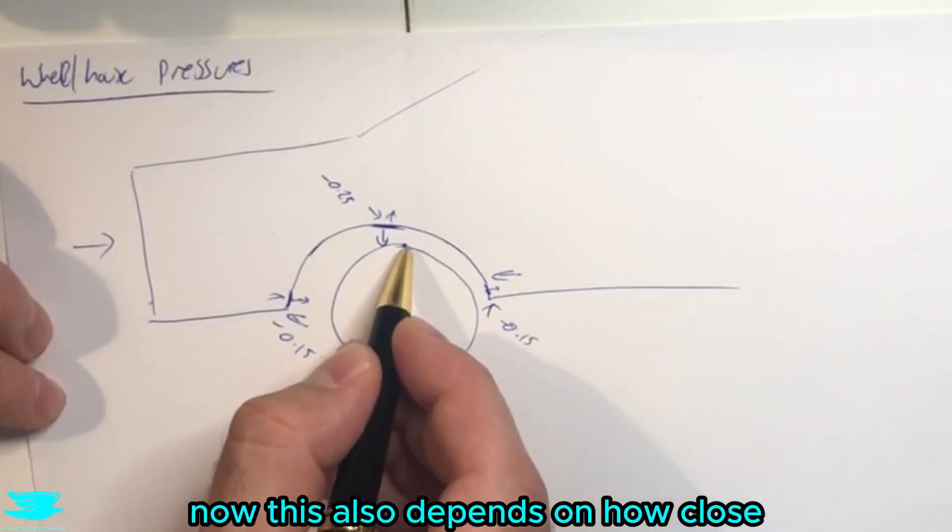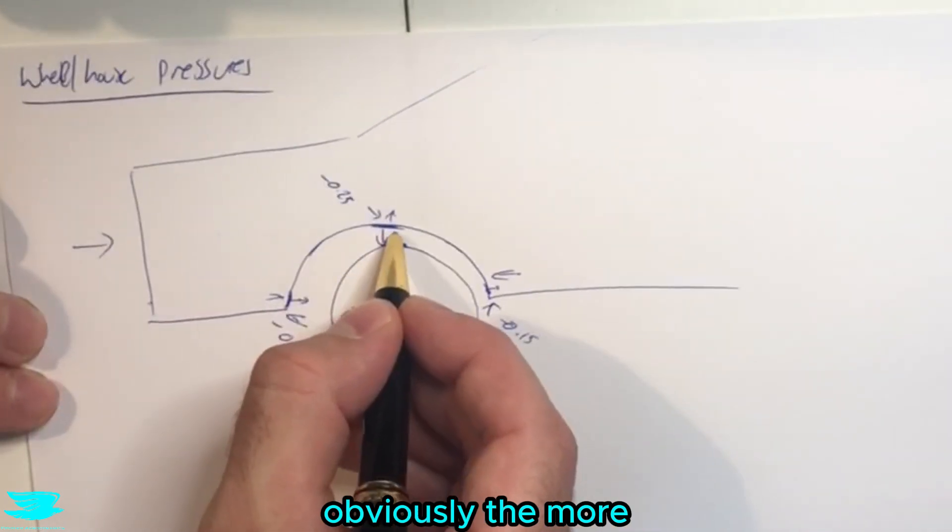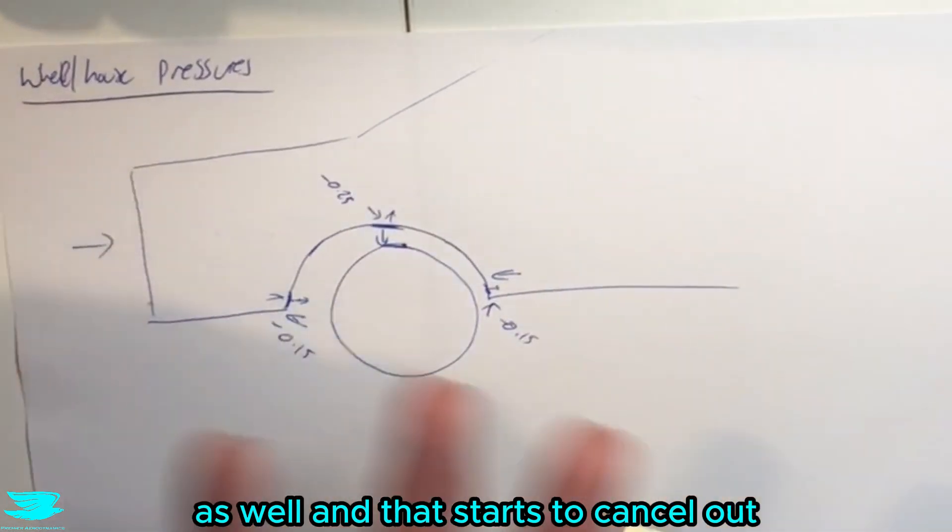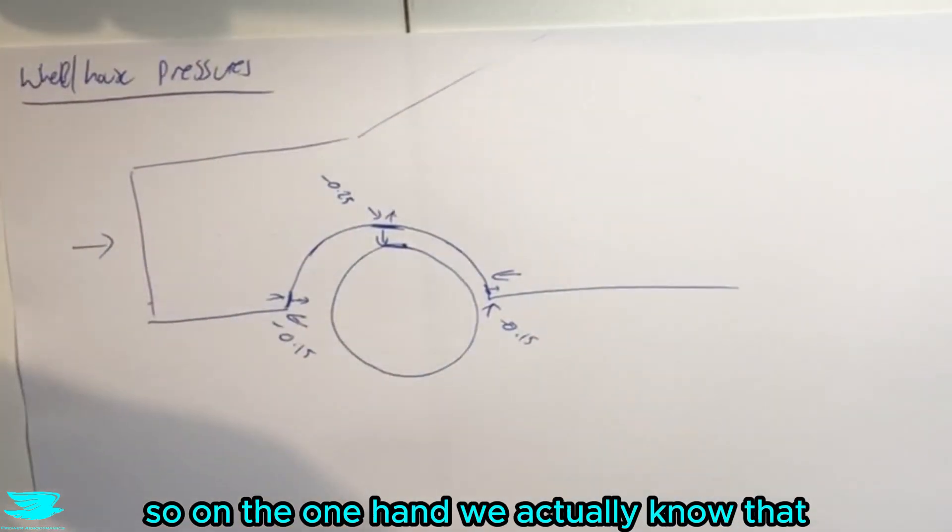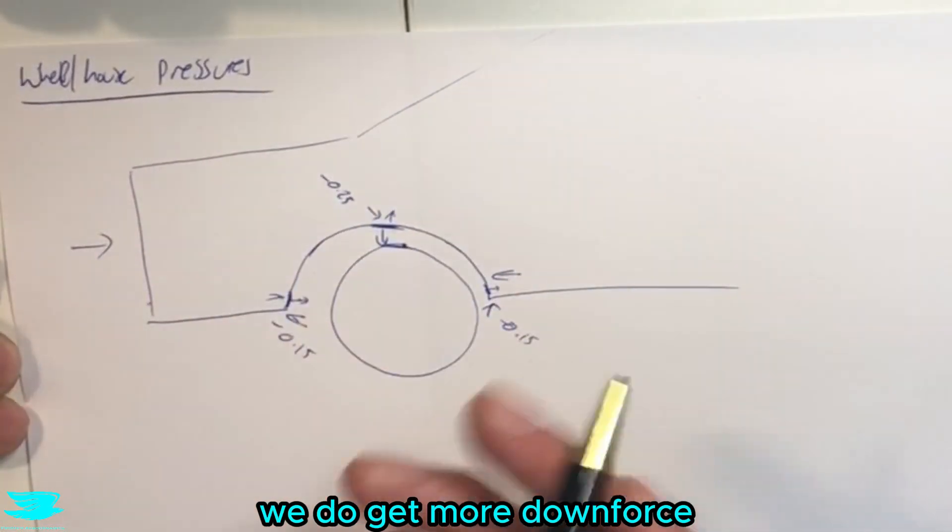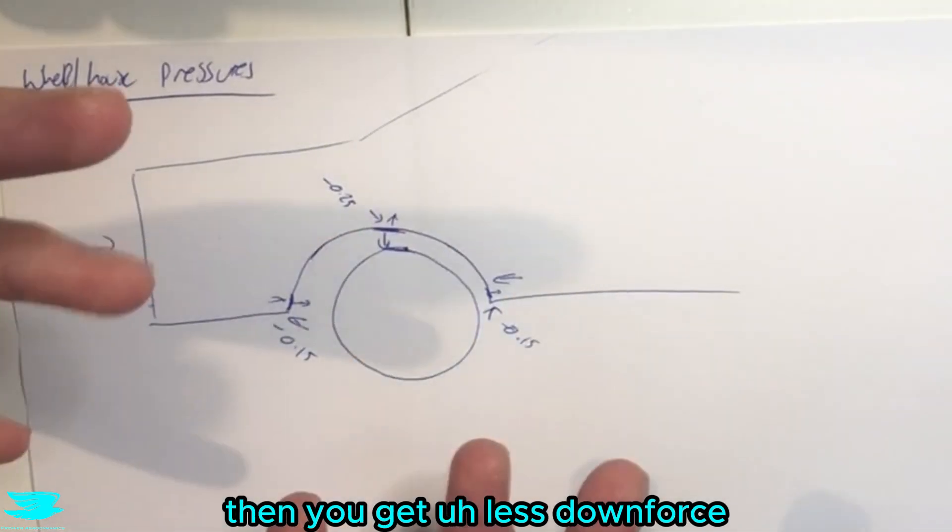Now, this also depends on how close the wheel is to this wheelhouse because the closer it gets, obviously, the more this low pressure here will start acting on this surface as well, and that starts to cancel out. So on one hand, we actually know that if you were to move this wheel away from the surface, we do get more downforce. If you move it closer to the surface, then you get less downforce.